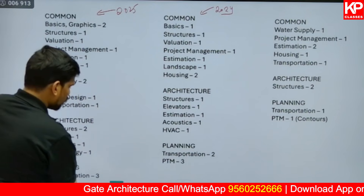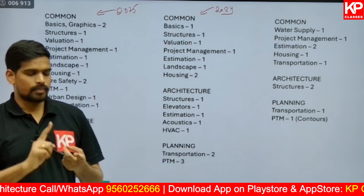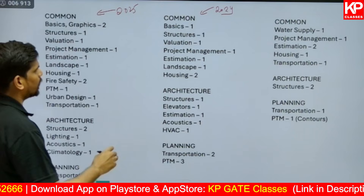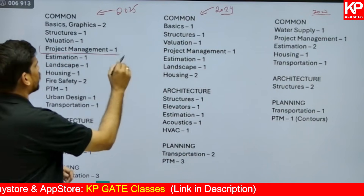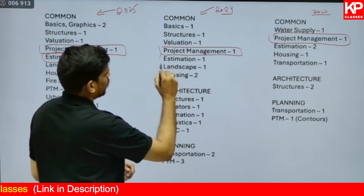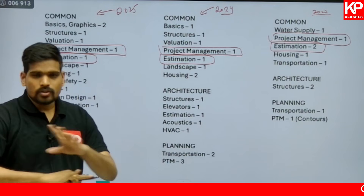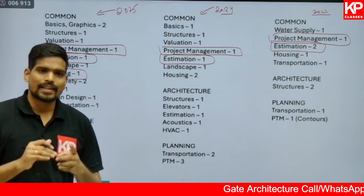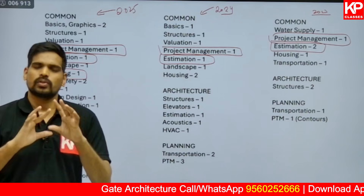At a broader scale, three subjects are common almost every year for the numerical part: Project Management, Estimation, and Housing. You can be almost certain you will get a numerical from each of these. In all three years — 2023, 2024, and 2025 — there was one numerical from Project Management. For Estimation, there was one numerical in 2024, one in 2025, and two numericals in the 2023 paper. Project Management and Estimation are almost sure to appear.